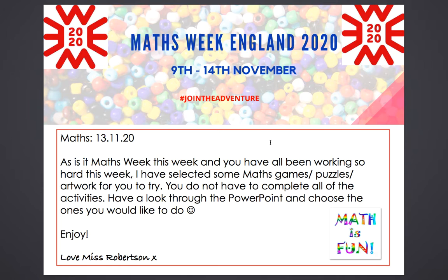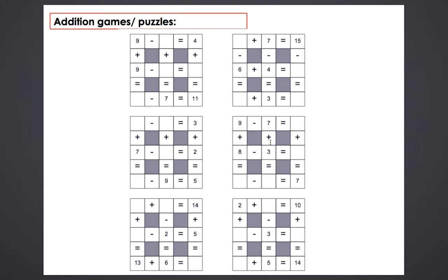First of all, we've got some different addition puzzles. On this one you've got to fill in the missing number to make the answer in each corner. For example, 9 add 9 equals 18, and then 18 take away 7 equals 11. Then you've got to think: 4 add something equals 11. So this is a missing number puzzle — you might like to have a go at that one.